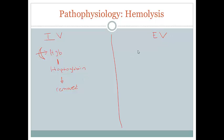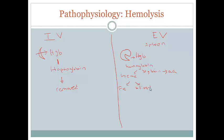Extravascular hemolysis is a little bit more involved — it's not in the vessels, it's happening more in the spleen. In the spleen there are splenic macrophages that are going to eat the hemoglobin released from the red blood cells and break it down into its constituent parts. Unsurprisingly, hemoglobin is broken down into globin and heme. The globin is broken down further into amino acids, while the heme is broken down into iron and biliverdin. The biliverdin is then converted into bilirubin — at this point we'll call it unconjugated bilirubin. This is picked up by the protein albumin, transported into the blood, and then transported to the liver where an enzyme called UGT converts that unconjugated bilirubin into conjugated bilirubin, which goes off into the gallbladder or intestines to be excreted.